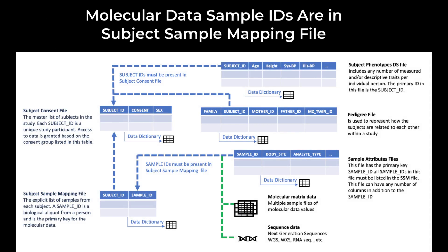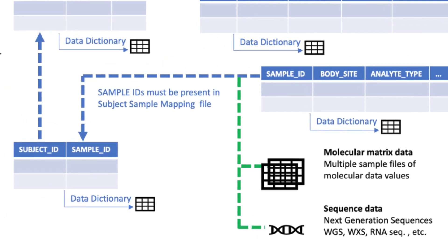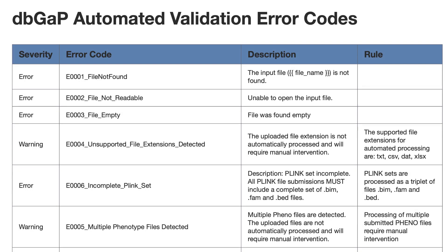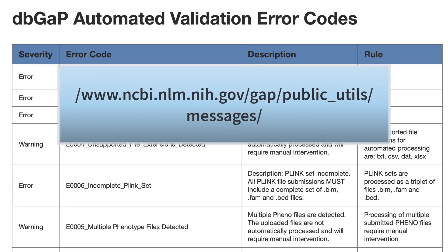Along with consent consistency, the pre-processing step ensures that IDs and sex values are consistent within the core files. Pre-processing also checks between the core files and molecular data submitted as PLINK or VCF files. This is a view of the dbGaP data model, showing that IDs used in the molecular data must be listed in the subject sample mapping file. When processing is complete, you will receive an email with the results of the check, and you can consult the same webpage to understand any errors and warnings.